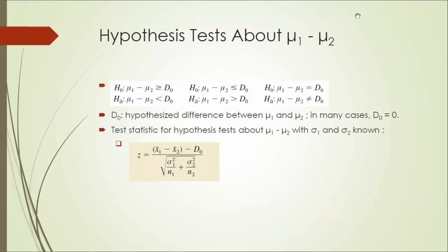The test statistic for hypothesis tests about two population means with known population standard deviations are as follows. Because we know the population standard deviation, this is going to be a z-score based on normal distribution. The z-score is given by the formula over here. The numerator is x1 bar minus x2 bar minus D0, the hypothesized difference. The denominator will simply be our standard error.